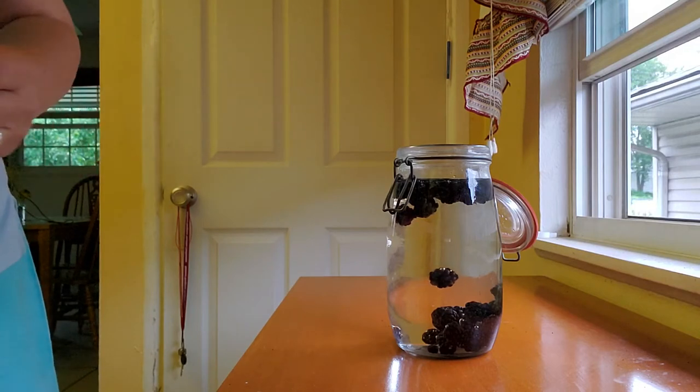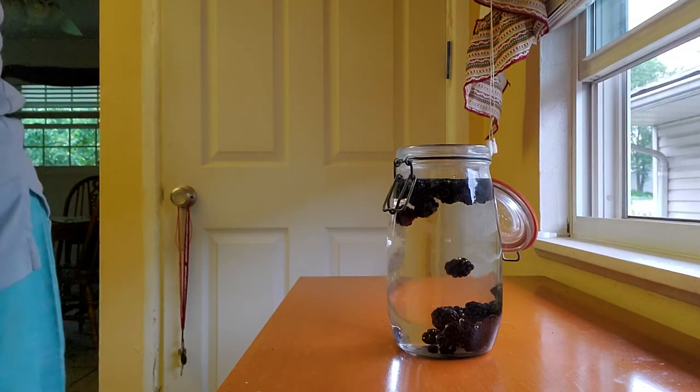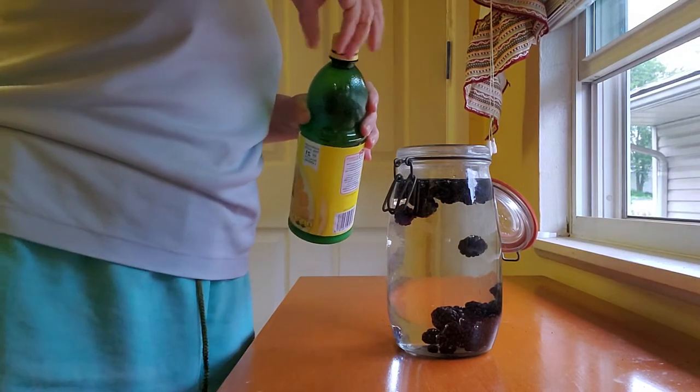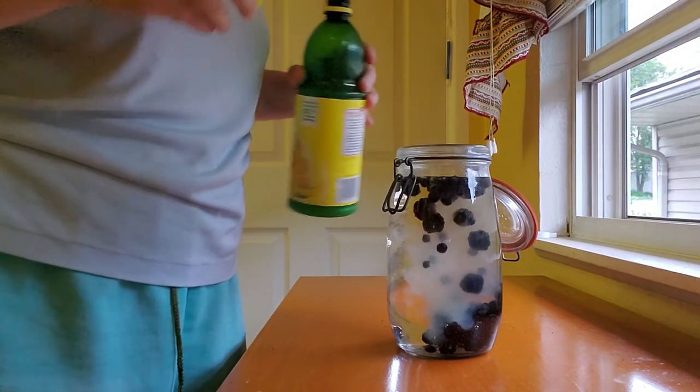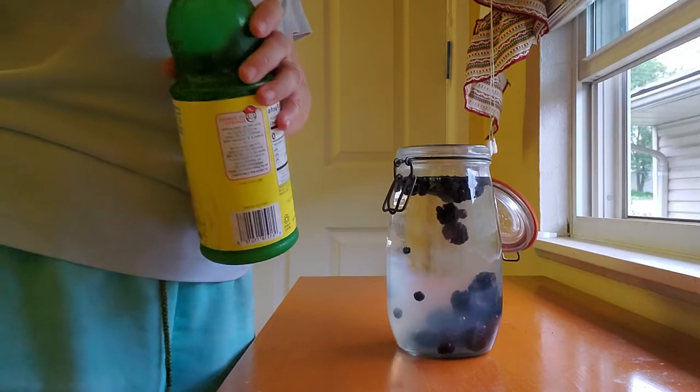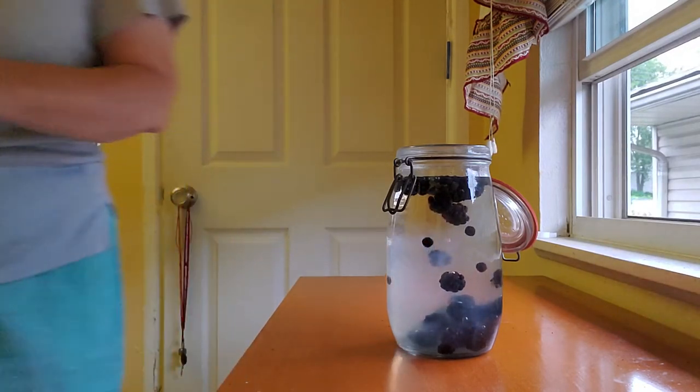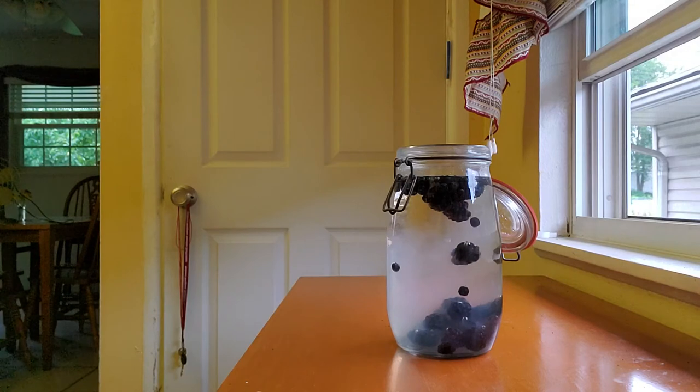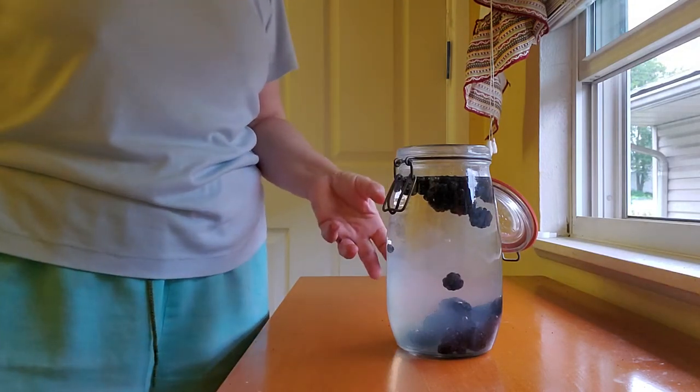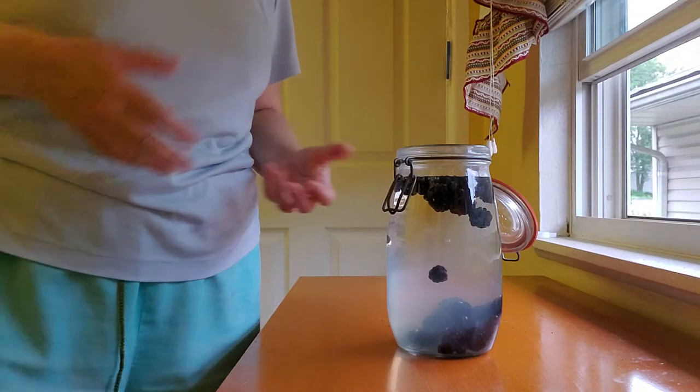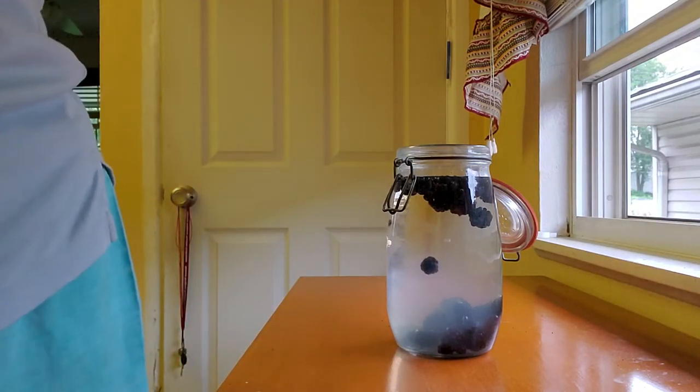So a mixture of different berries and then I'm going to add some lemon juice and this is just going to basically bring the pH of the water down just a little to favor the yeast or the microbes that are already on the berries to be the main fermenting agent.